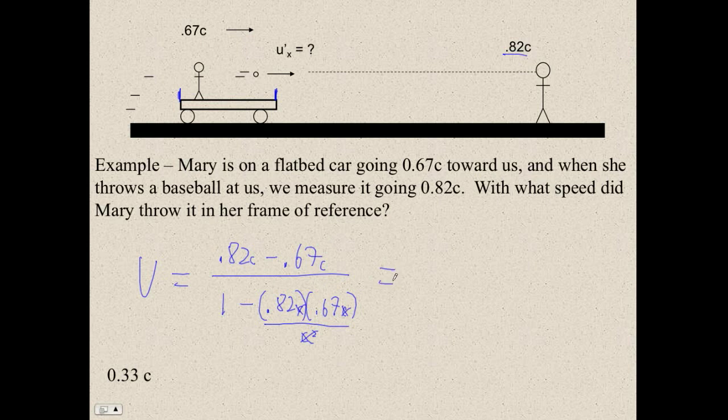And then you end up with whatever speeds you did up there. Okay, so this is going to be parenthesis, left parenthesis, 0.82 minus 0.67, right parenthesis, divided by left parenthesis, 1 minus 0.82 times 0.67, right parenthesis. Did I do that right?